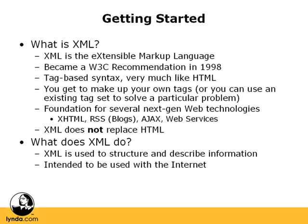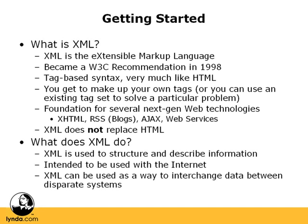From day one, the authors of the XML spec intended that XML would be used with the Internet to deliver information, either via the web or via the public Internet. And finally, XML can be used to interchange data between disparate systems that weren't designed to do so. For example, if a bank needs to exchange data with a loan company and they're using computer systems — old or new — that were never designed to talk to each other, XML can bridge that gap by structuring and arranging data in a way that both systems can work with.